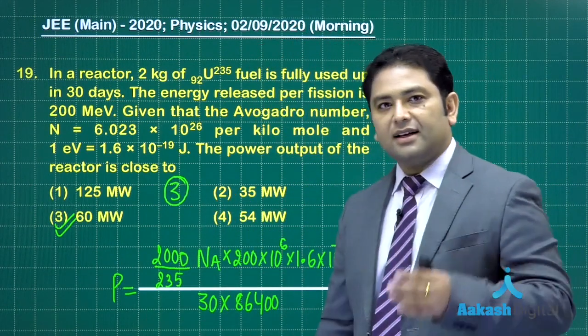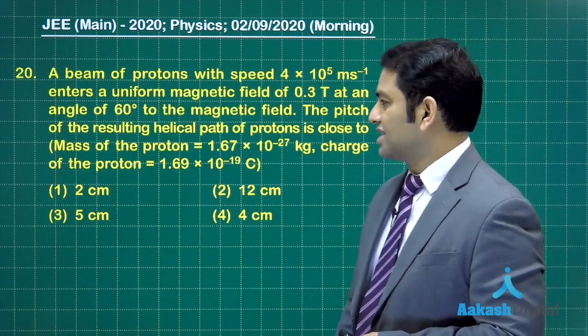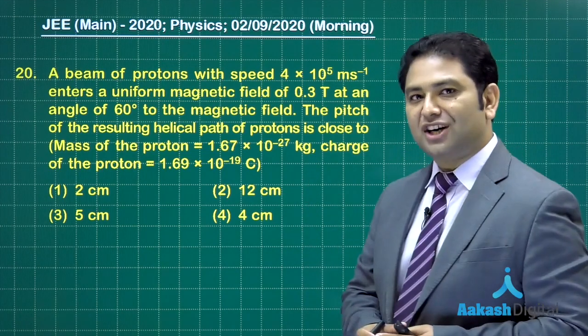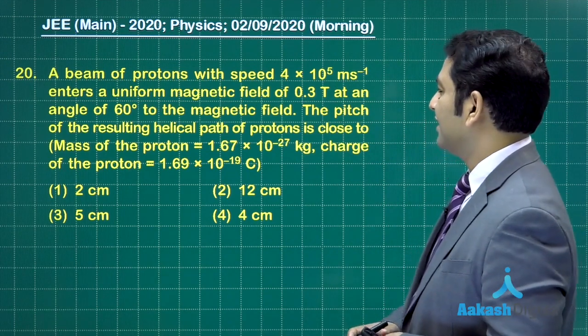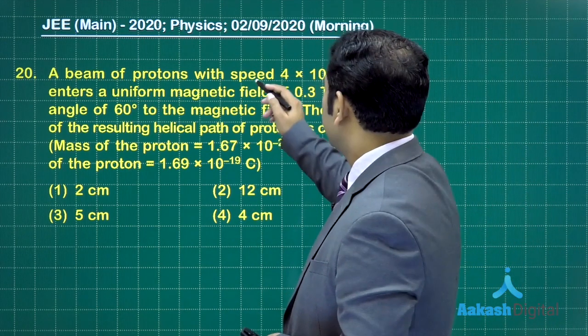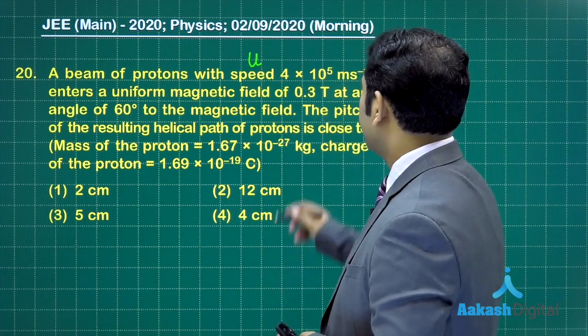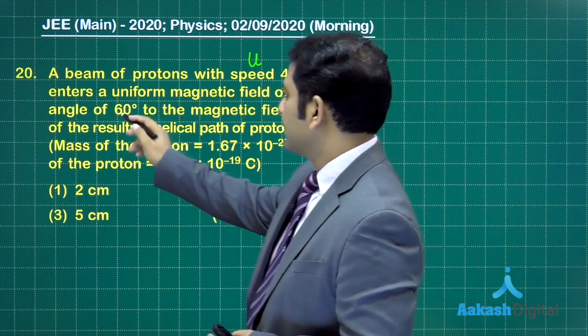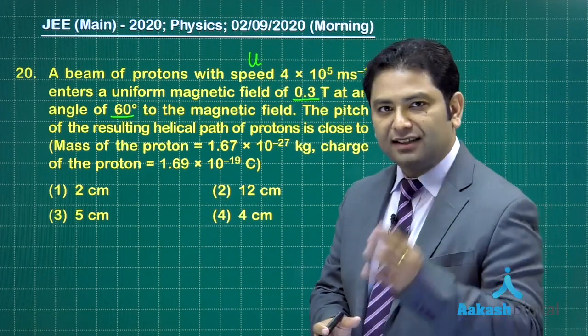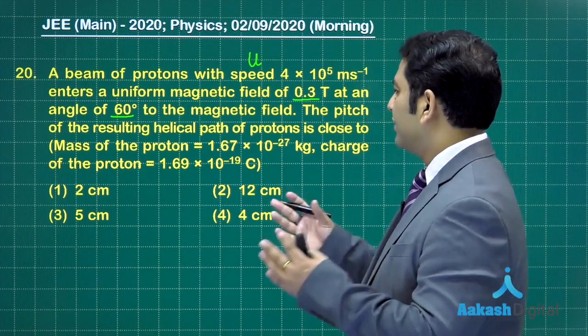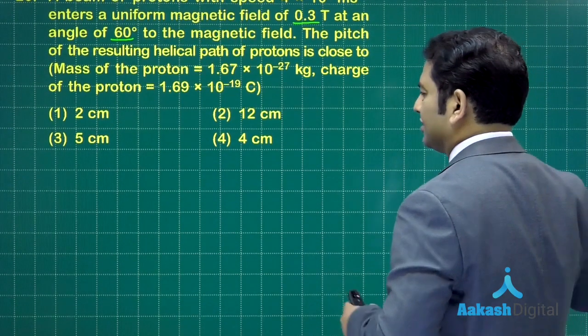Let's go for the 20th question. The 20th question is from moving charges and magnetism. Something is associated with the helical path. This speed has been given, I will call this as U. The magnetic field is given, and this angle 60 degrees is the angle between the initial velocity and the magnetic field. We need to calculate the pitch of the resulting helical path.